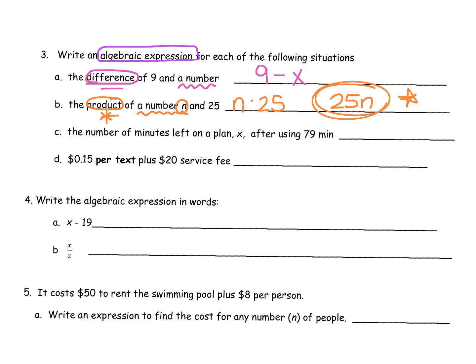C, the number of minutes left on a plan. So we're going to use our variable after using 79 minutes. So we have all of our minutes, take away those 79 that we used and then we have whatever is left. And then 15 cents per, per is a multiplication word, plus add $20 service fee. I don't know how many texts I sent so that's my variable. So I have 0.15 texts and they're being multiplied, I don't put a multiply symbol, I just smoosh them together, so plus the $20 fee. The last two are a little tricky but I know you guys can do well.